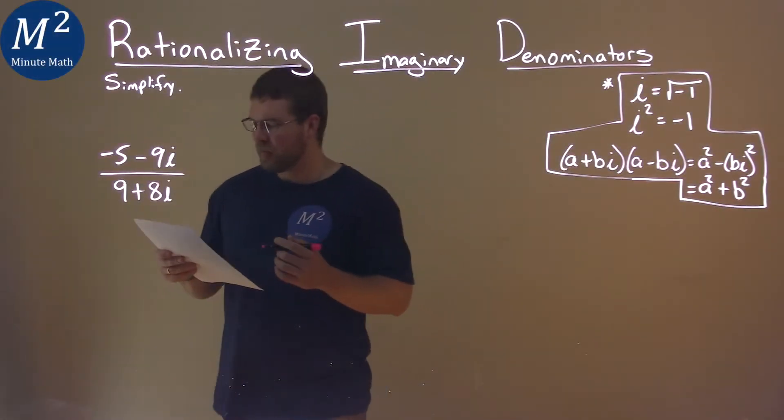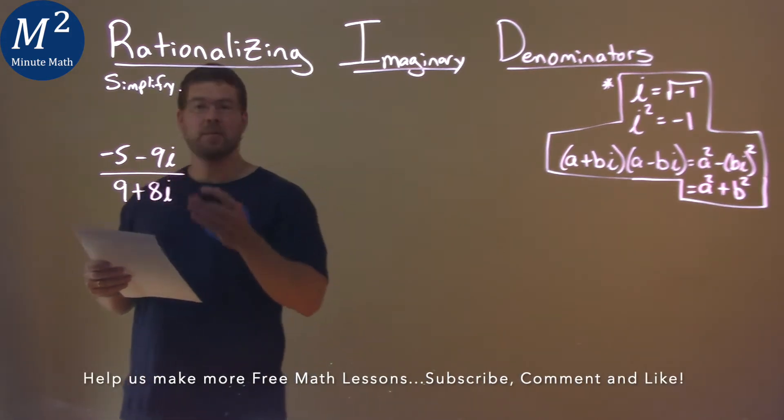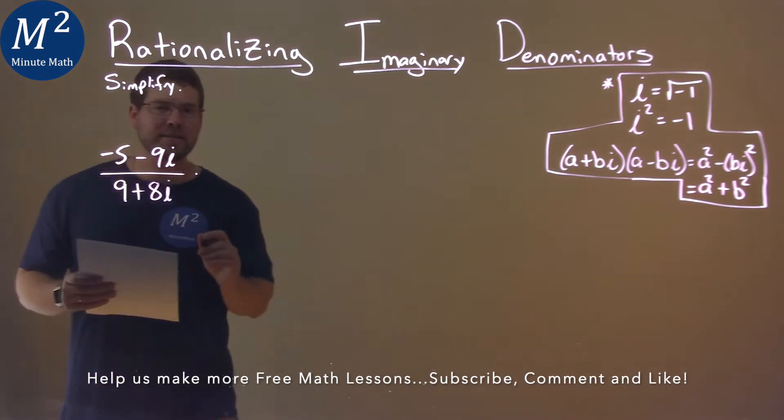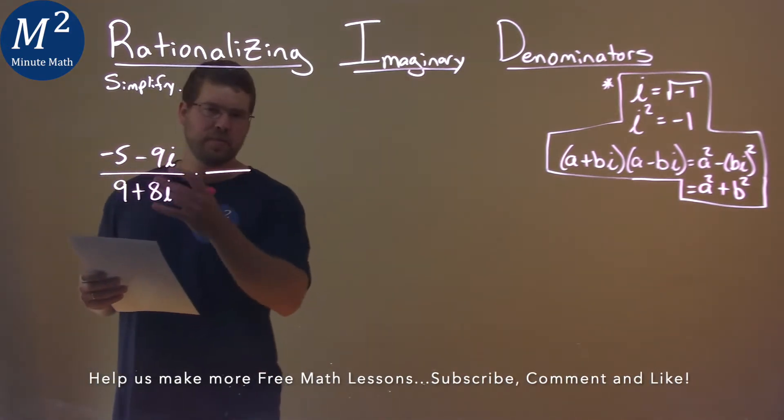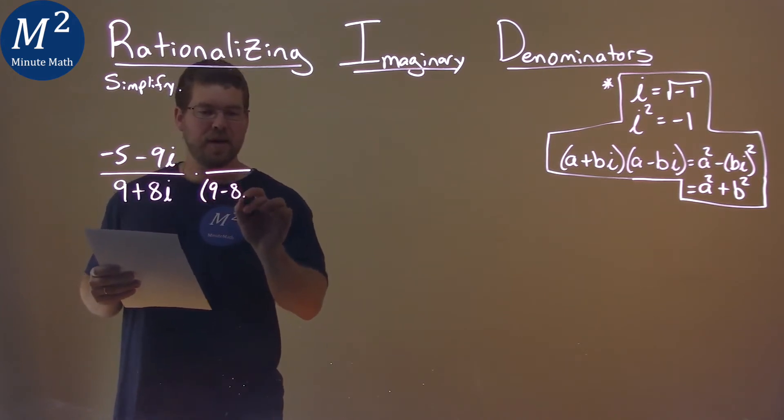We're given this problem right here, negative 5 minus 9i over 9 plus 8i, and we've got to simplify. I want to find this number's complex conjugate, the denominators. 9 plus 8i, we have 9 minus 8i.